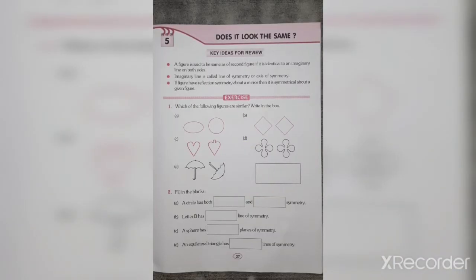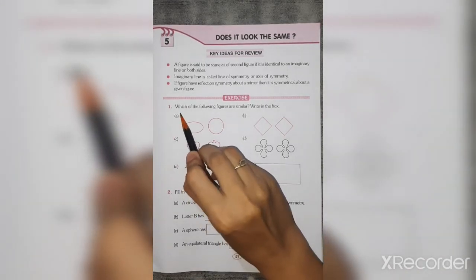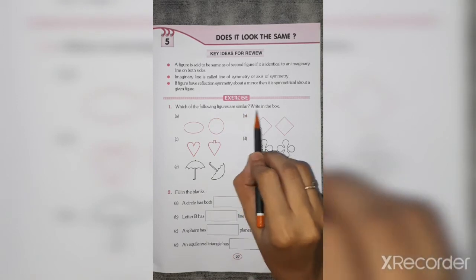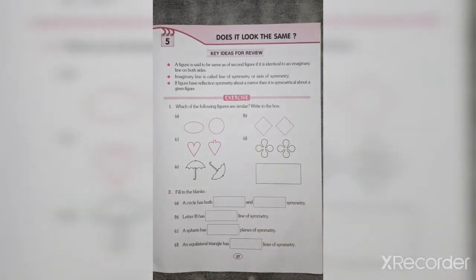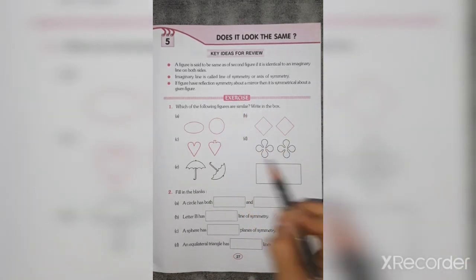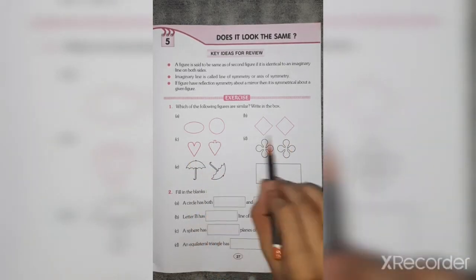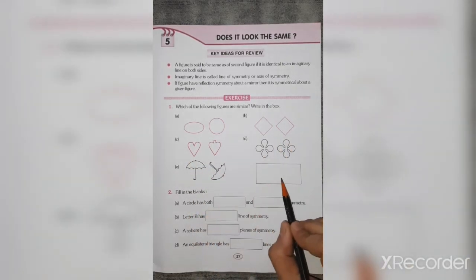After learning about line of symmetry, let's solve the exercises related to symmetry. Question 1: Which of the following figures are similar? Write in the box. By observing, you can write the answers.